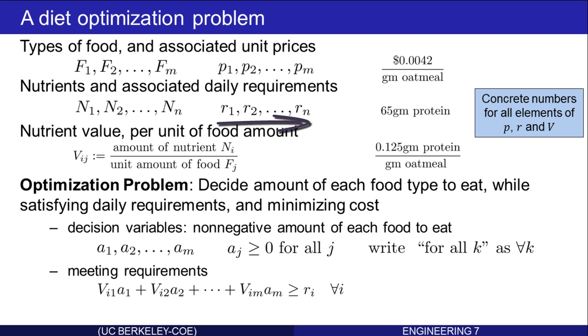That's RI. So this inequality must hold for all I, I equal 1 to N, the number of nutrients that we're tracking. Remember that the choice is how much amount of each food to eat. The choice of the A1 through AM. There's a cost of that choice because the foods have prices. And the cost is simply a summation of each individual price times the amount.